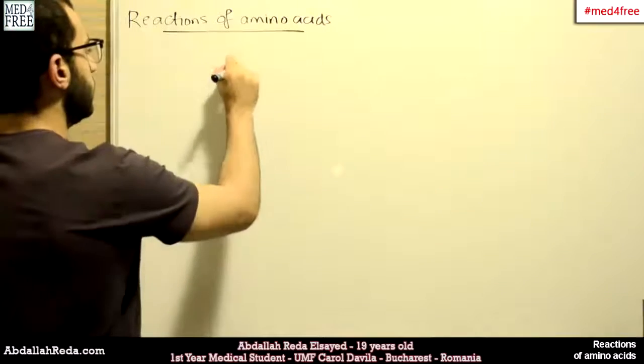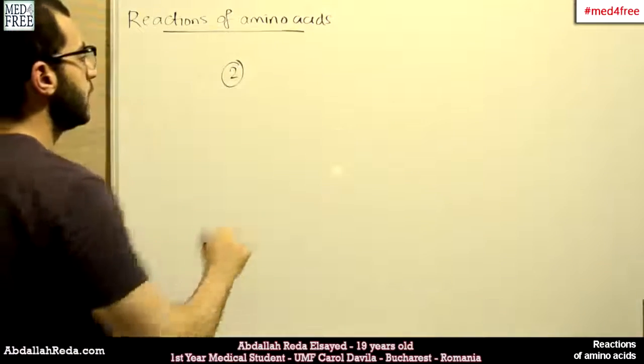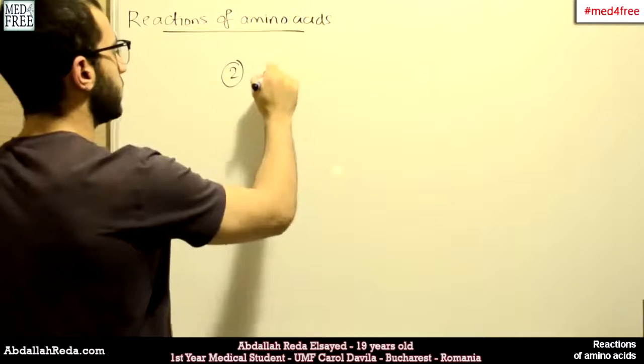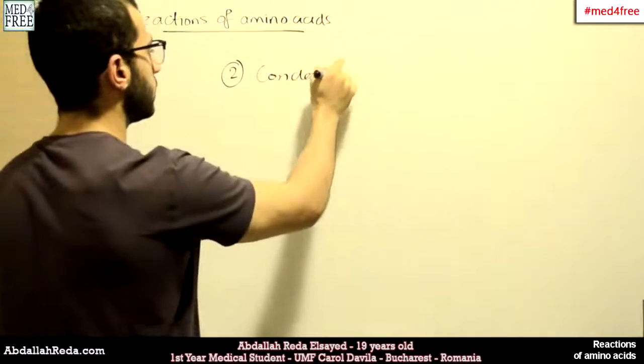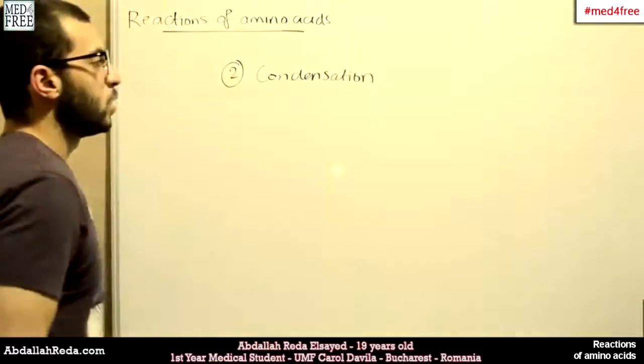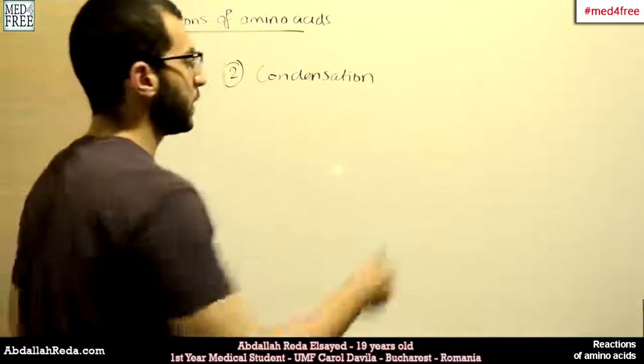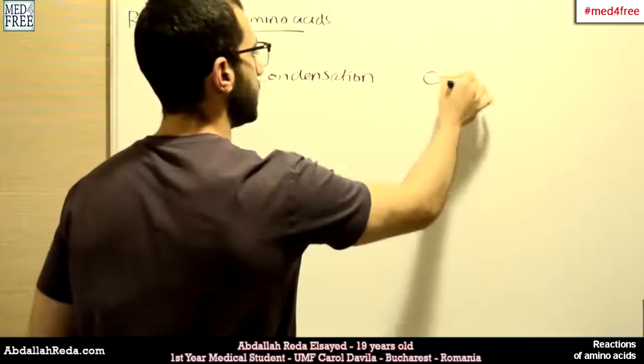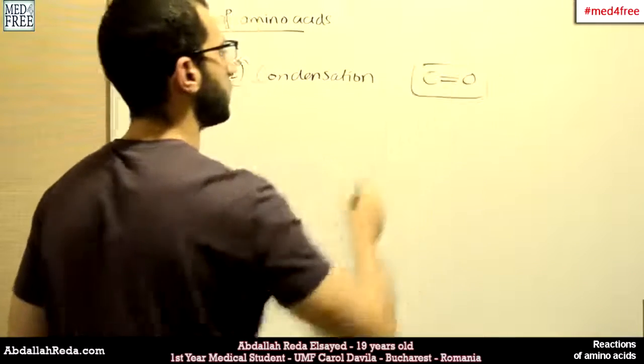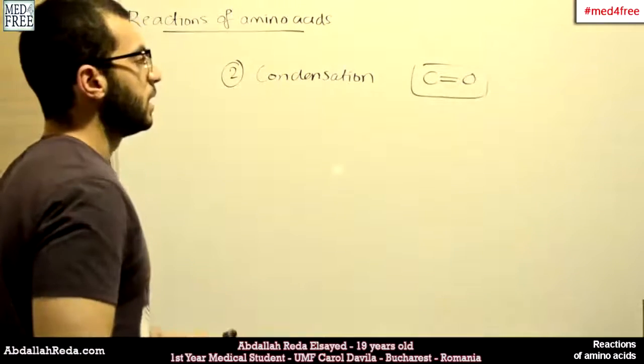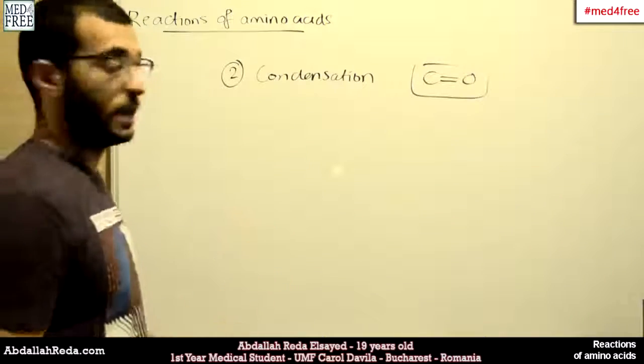The second type of reaction is a condensation reaction with molecules that contain a carbonyl group. A carbonyl group is a C double bond O. This is carbonyl. And this produces something called a Schiff base.